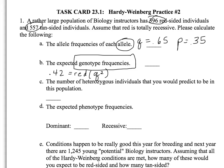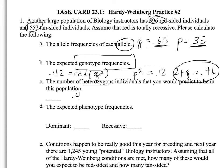Now we can come back and finish the genotype frequencies. p squared is 0.35 squared, which equals 0.12. And 2pq, or 0.65 times 0.35 times 2, is equal to 0.46. Part C asks for the number of heterozygotes in the population. The frequency of heterozygotes is 0.46, and 0.46 times the total of 953 gives us 438 heterozygotes.